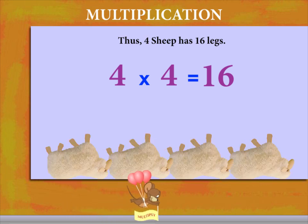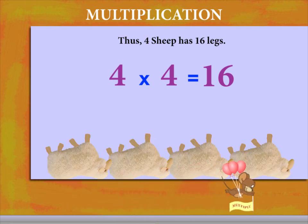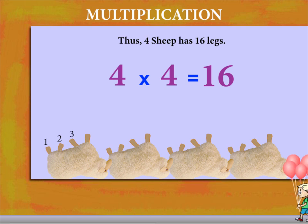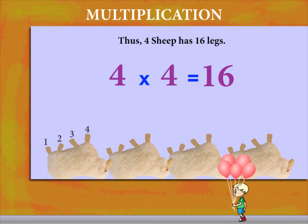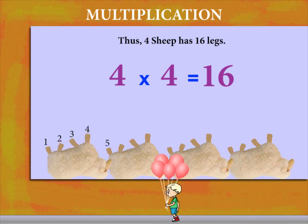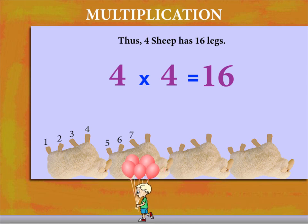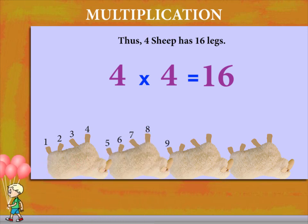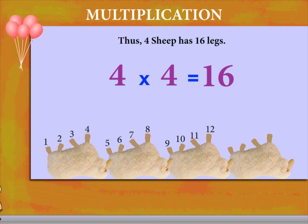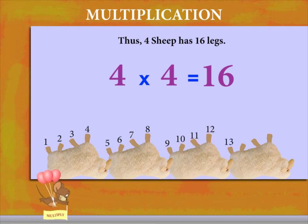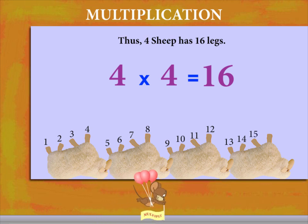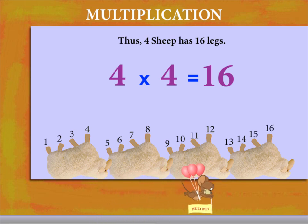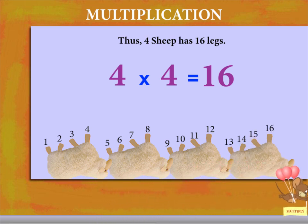Let's turn the sheep upside down and count. 1, 2, 3, 4 — 1 sheep. 5, 6, 7, 8 — 2 sheep. 9, 10, 11, 12 — 3 sheep. 13, 14, 15, 16 — 4 sheep. That's easy.